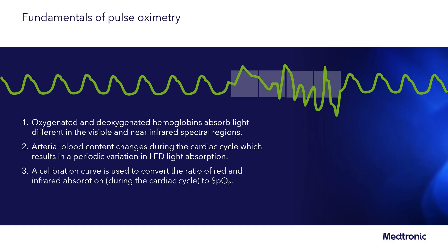We can break the fundamentals into three important parts. First, that oxygenated and deoxygenated hemoglobin absorb light differently. Two, as arterial blood content changes, so does the LED light absorption. Three, a calibration curve can be used to convert the ratio of red and infrared absorption to SpO2.